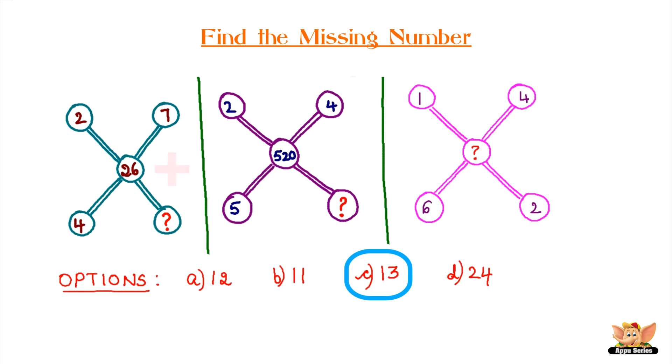In the first set, add all the outer numbers to get the middle number. In the second set, multiply all the outer numbers to get the middle number. In the third set, add all the outer numbers to get the middle number.